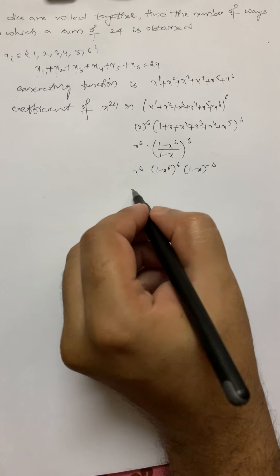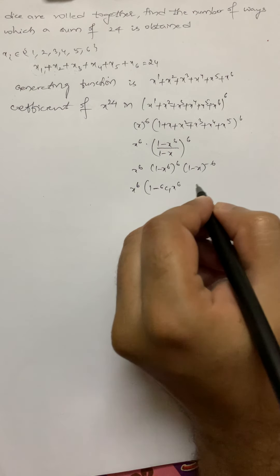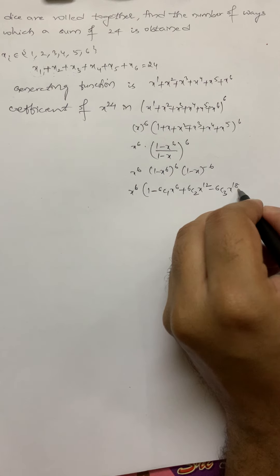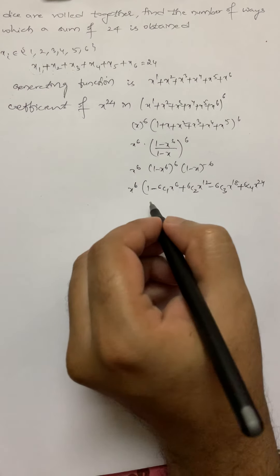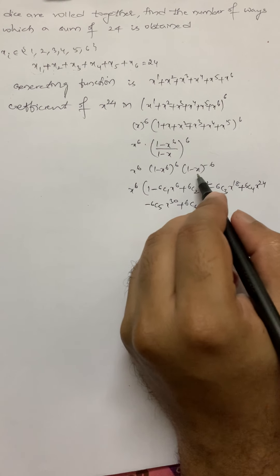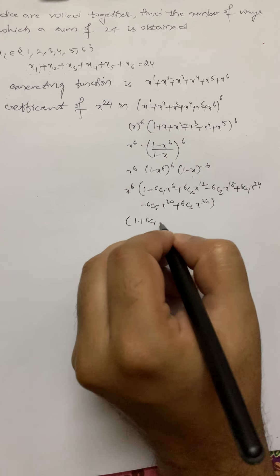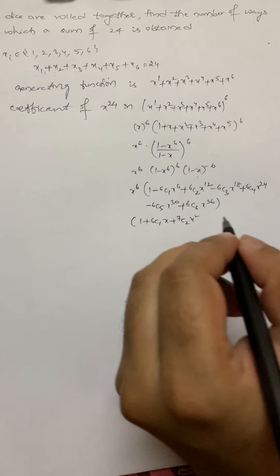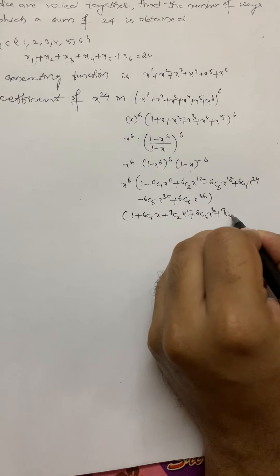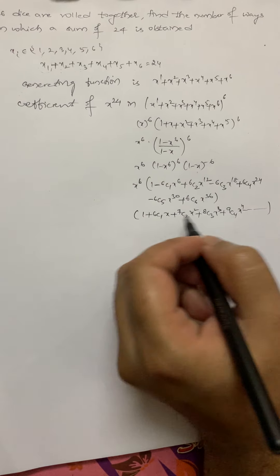Expanding this using the binomial theorem: (1 − x^6)^6 = 1 − 6C1·x^6 + 6C2·x^12 − 6C3·x^18 + 6C4·x^24 − 6C5·x^30 + 6C6·x^36. And (1 − x)^(−6) expands as 1 + 6C1·x + 7C2·x^2 + 8C3·x^3 + 9C4·x^4 + … continuing to infinity.